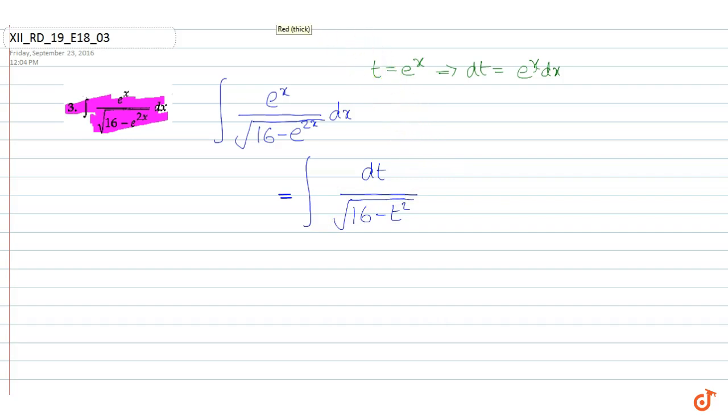Now we apply a basic integration formula: integral of 1 over the square root of a squared minus x squared dx equals sin inverse of x over a plus c, where c is a constant.